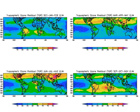Ozone is a trace gas of the troposphere, with an average concentration of 20 to 30 parts per billion by volume (ppbV), with close to 100 ppbV in polluted areas. Ozone is also an important constituent of the stratosphere, where the ozone layer exists.